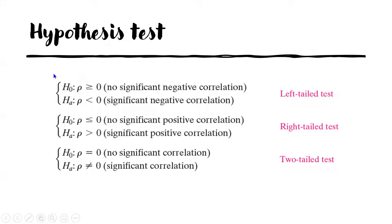For the left-tail test, the null hypothesis H₀ is: rho is greater than or equal to zero, meaning there is no significant negative correlation. The alternative hypothesis Hₐ is: rho is less than zero, meaning there is a significant negative correlation.